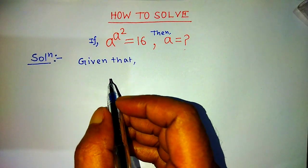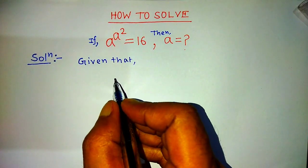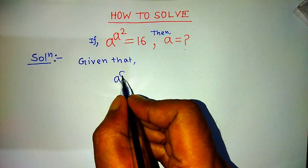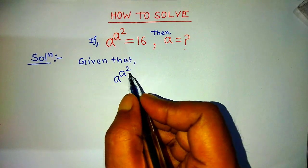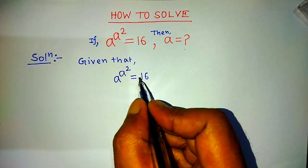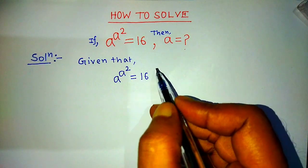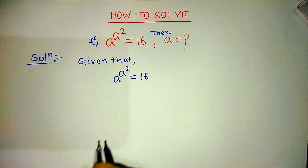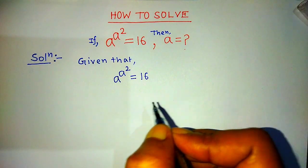Our given exponential equation is a raised to the power a to the power 2 is equal to 16. To find the value of a from this exponential equation, we have to take power 2 on both sides.